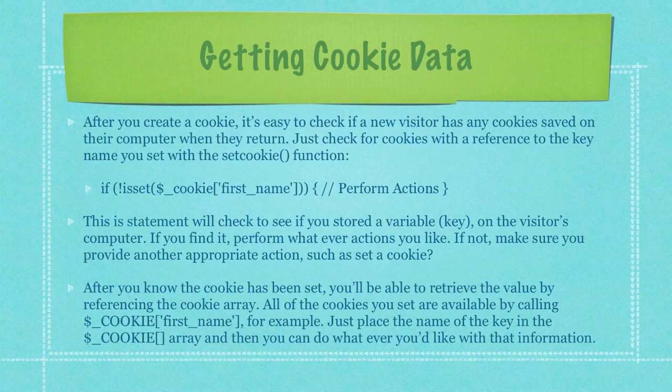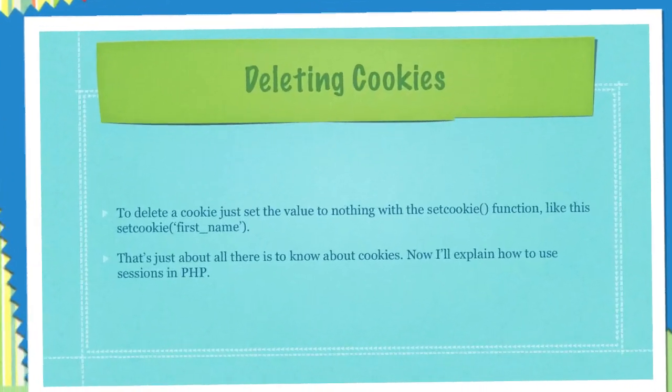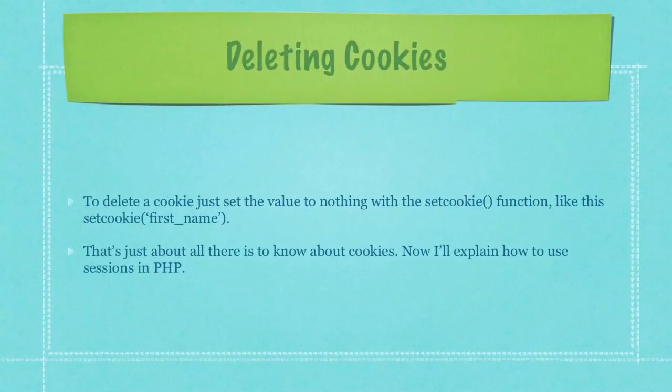After you know the cookie has been set, you'll be able to retrieve the value by referencing the cookie array. All of the cookies you set are available by calling $_COOKIE followed by whatever variable you assigned. Just place the name of the key in that cookie array and you can do whatever you'd like with that information. To delete a cookie, just set the value to nothing with the setCookie function like this. And that's just about all there is to know about cookies.